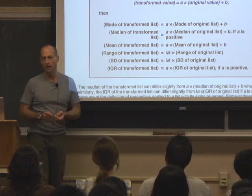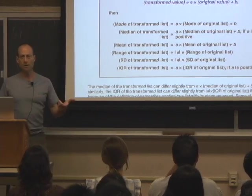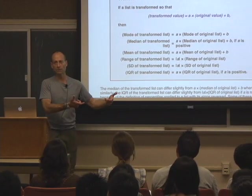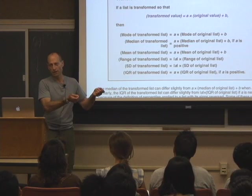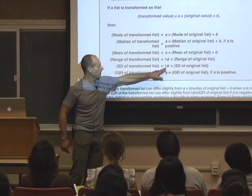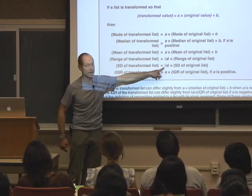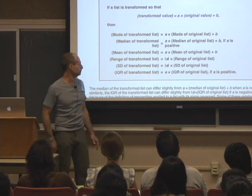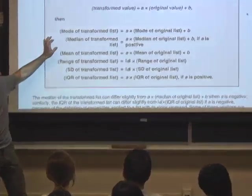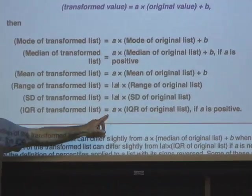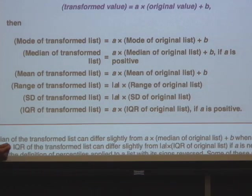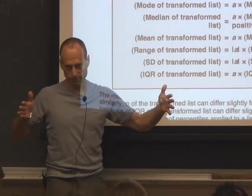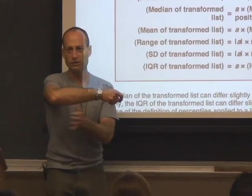The effect on the SD of an affine transformation is to multiply the SD by the absolute value of the multiplicative constant. The IQR has the same behavior for positive multipliers: if A is positive, the IQR of the transformed list is A times the IQR of the original. If A is negative, there's a possible slight difference because reflecting the list may shift which elements capture the quartiles.